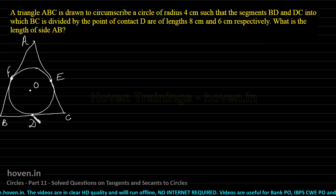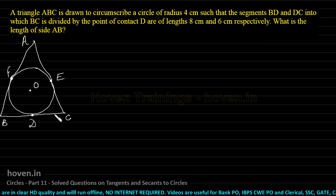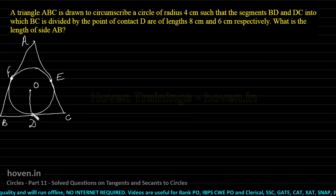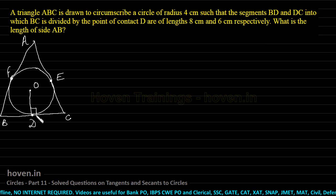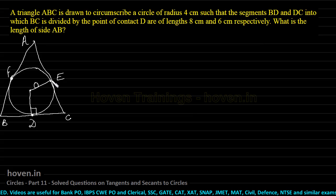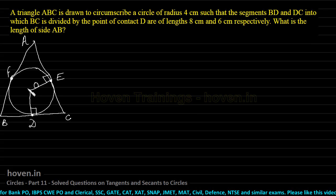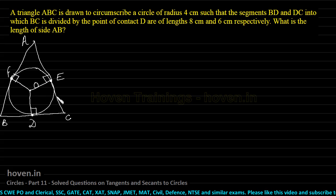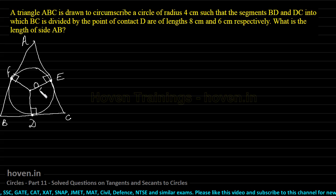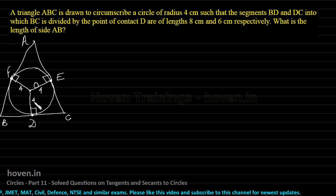We know that D is the point of contact of the tangent. So OD will be perpendicular to the tangent, because the radius joined to the tangent is perpendicular. Likewise, OE and OF will also be perpendicular to their respective tangents. The radius is given as 4 in each case.